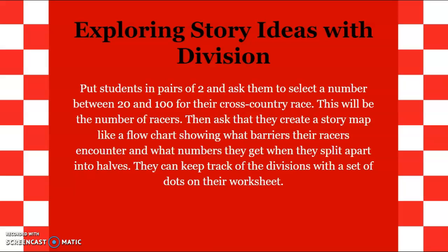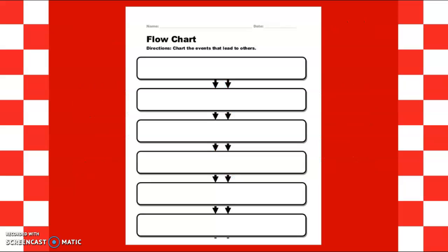It's really just rewriting the story and having them do it themselves. With the number of racers that they decide, I'm going to ask that they create a story map, like a flowchart, showing what barriers the racers would encounter and what numbers they get when they split apart into halves. They can keep track of the divisions with a set of dots on their worksheet or any other way they plan to, and I'll be using a flowchart such as this.